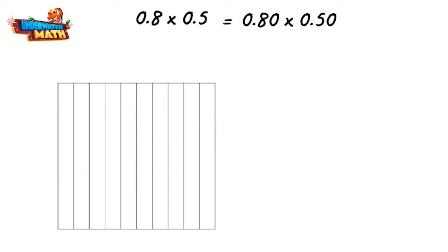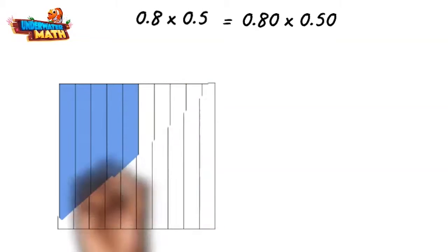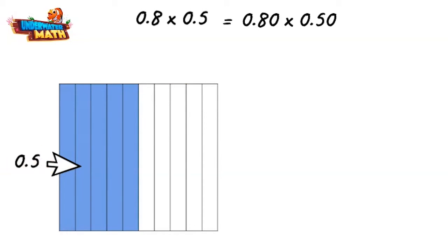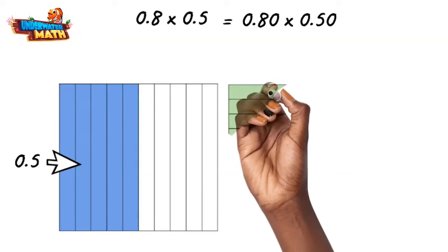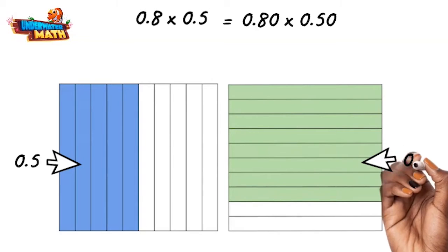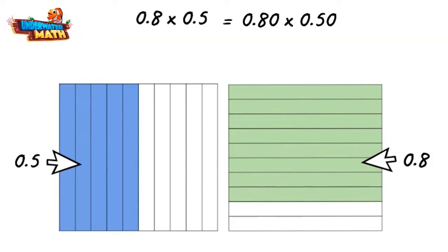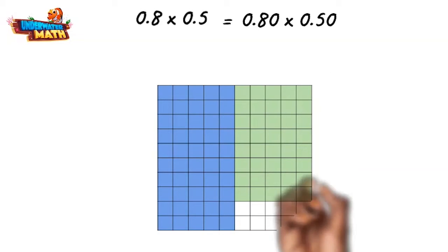This model shows ten tenths, or one whole, and five tenths is five of these bars shaded in. We will do the same for eight tenths with bars going the other direction. To find eight tenths of five tenths, we overlap the two models to form a hundredths grid.